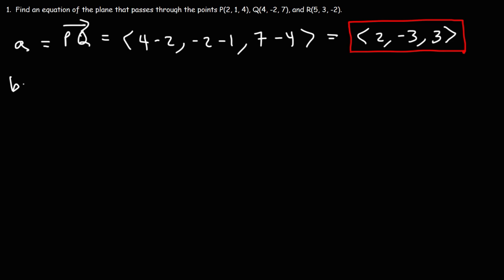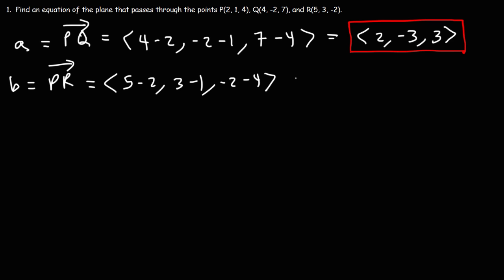Now let's find vector B, which we define as vector PR. It's R minus P: 5 minus 2, 3 minus 1, and negative 2 minus 4. This gives us 3, 2, negative 6.